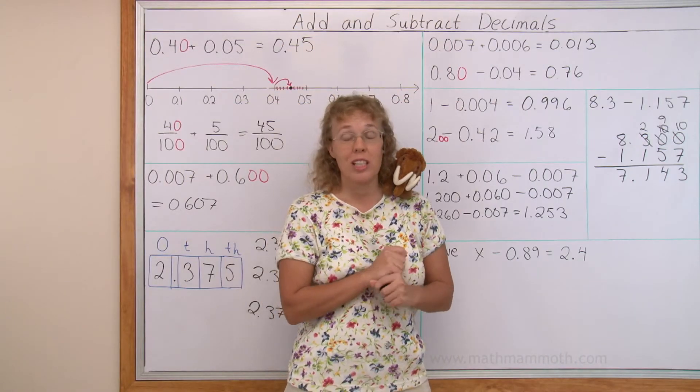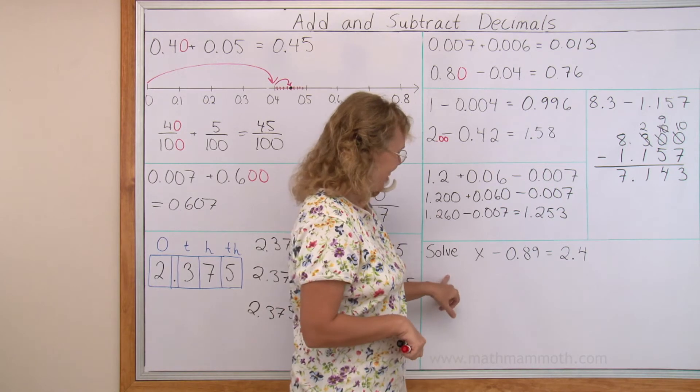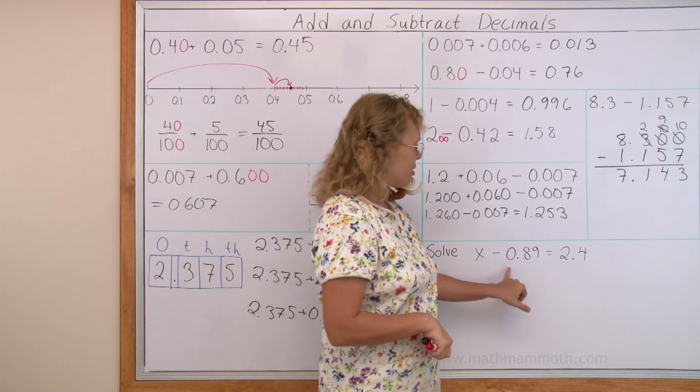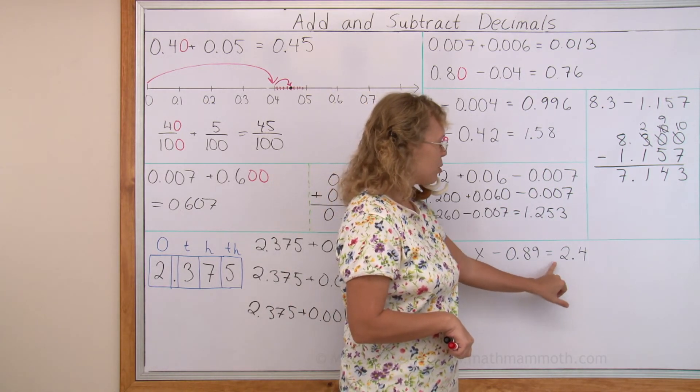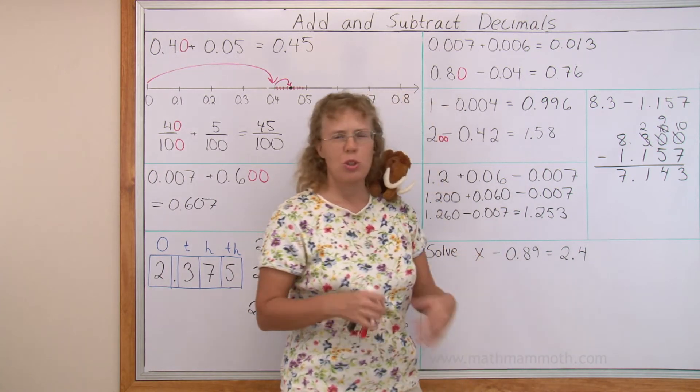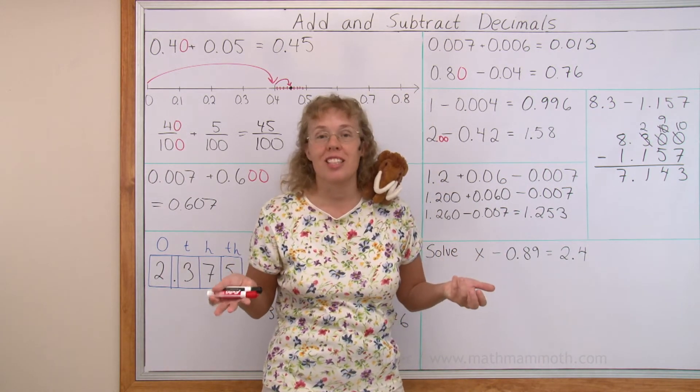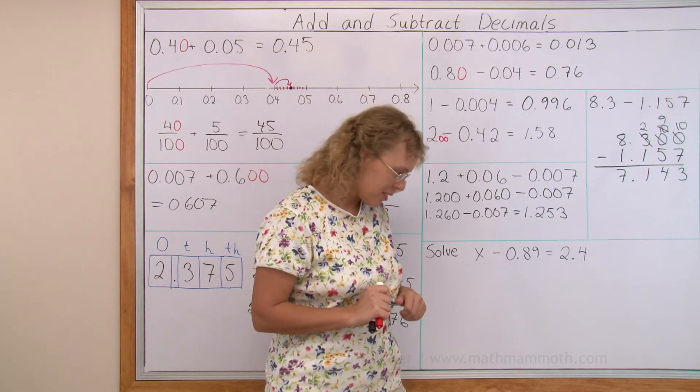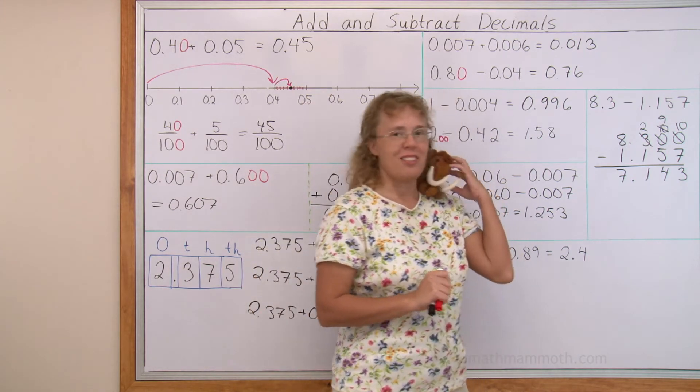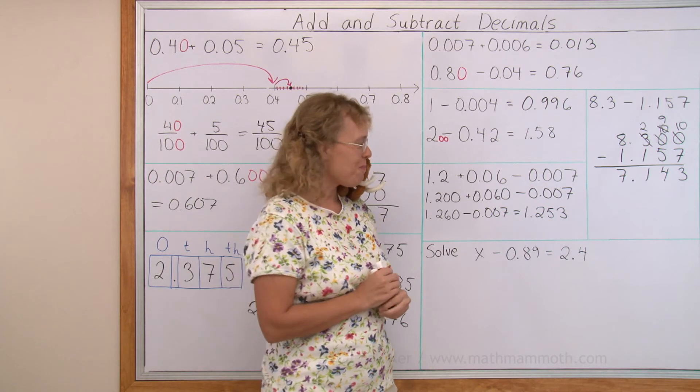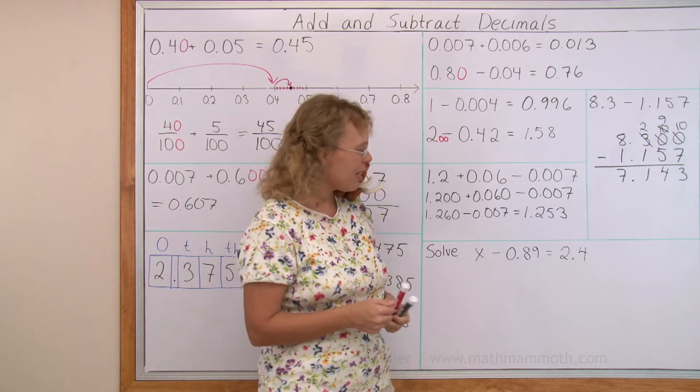Lastly we have an equation with x. Solve x minus 0.89 equals 2.4. Now don't get alarmed, it might look difficult but it is not. Okay, what's that Mathi? Oh yeah, remind them of the little trick or little helping problem. Okay, let's make a helping problem. I will copy this problem but I will use easier numbers.